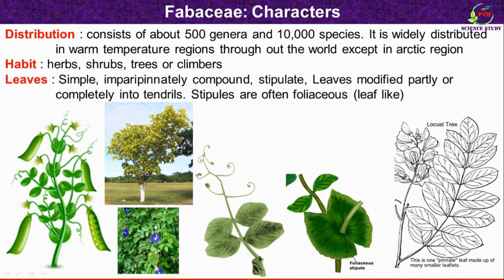Regarding morphological features, first we will see leaves. Leaves are simple or imparipinnately compound. In this diagram we can see an imparipinnately compound leaf. Imparipinnately compound means the total number of leaflets is always odd, because at the end there is a single leaflet without a pair. This type of leaf is known as imparipinnately compound.